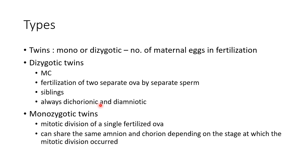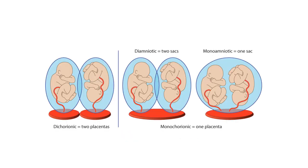Dizygotic twins always have two placentas and two amniotic sacs. Monozygotic twins result due to mitotic division of a single fertilized ovum, i.e., mitotic division of the zygote. Monozygotic twins can share the same amnion and chorion depending on the stage at which the mitotic division occurred. This picture shows dichorionic twins with two separate placentas, and this picture shows monochorionic twins with only one placenta. Monochorionic twins can be diamniotic, having two separate amniotic sacs, or monoamniotic, having only one amniotic sac.